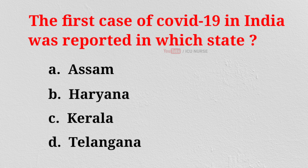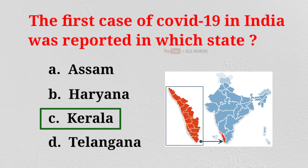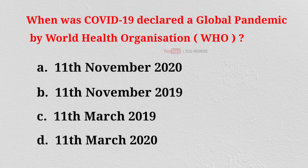The first case of COVID-19 in India was reported in which state? A. Assam. B. Haryana. C. Kerala. D. Telangana. And the correct answer is C: Kerala.